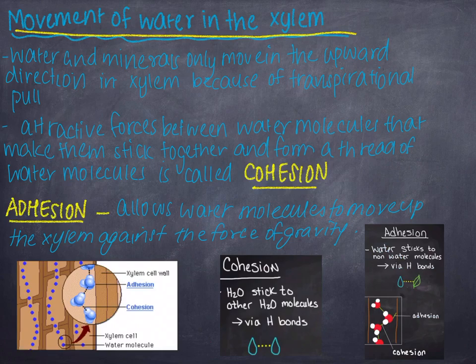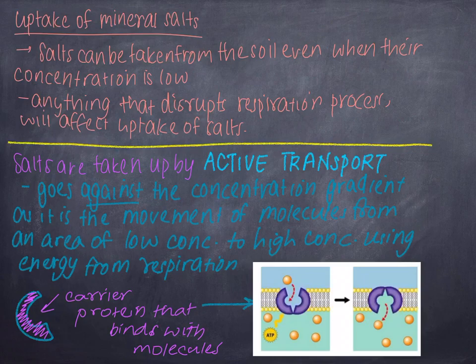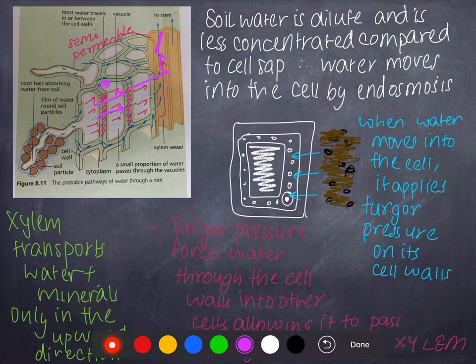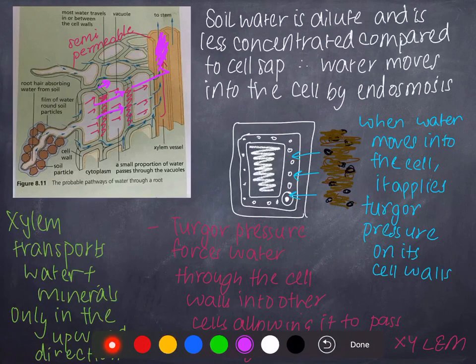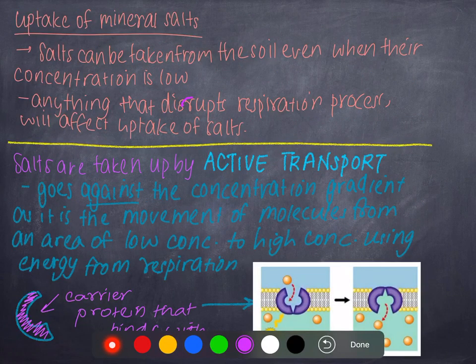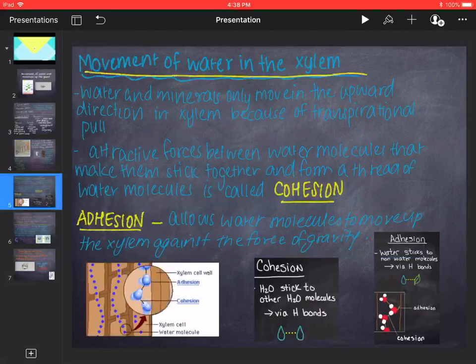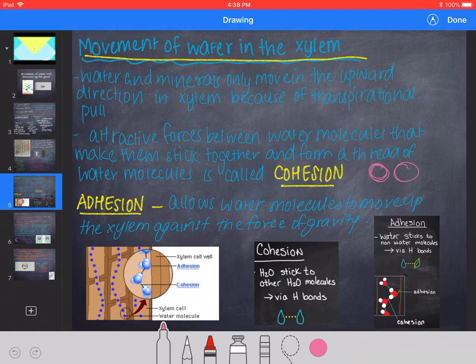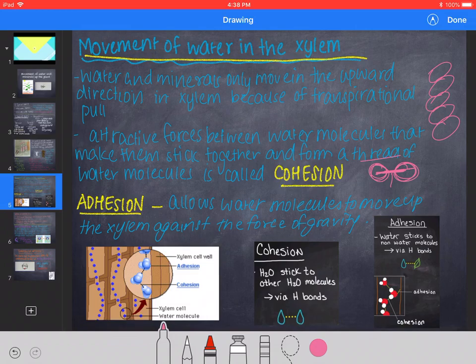Movement of water in the xylem: water and mineral salts only move in the upward direction in the xylem because of transpirational pull. This is because of two things: cohesion and adhesion. Attractive forces between water molecules that make them stick together is called cohesion. In this case, you have two water molecules with a covalent bond between them. This bond allows them to stick together, and when it sticks together, it forms a thread of water molecules, a chain of water molecules. This allows the water to move up the xylem via the transpirational pull.